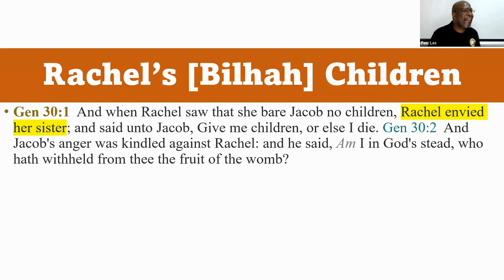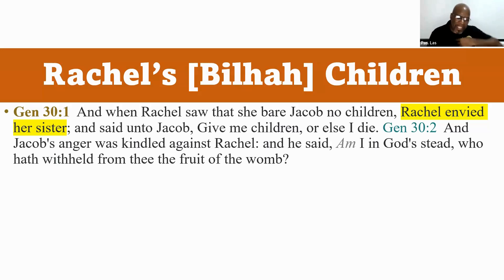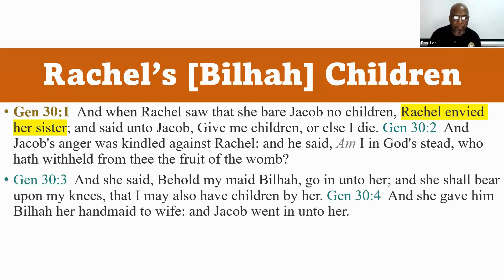Jacob got angry and kindled, styling up Rachel and saying, 'Am I in God's stead, who hath withheld from thee the fruit of thy womb?' So you can't rush me and say I must give you a child. And so we have this animosity between Leah and Rachel. Rachel then came up with a plan. She said, 'Behold my maid Bilhah — go in unto her, and she shall bear upon my knees, that I may also have children by her.' You remember Hagar and Sarah? And she gave Bilhah her handmaid to Jacob as wife.